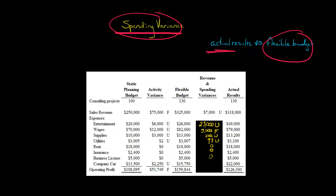For the company car, the actual expense was $22,000, but it should have been $15,750 per the flexible budget. So the actual expense was $6,250 higher than it should have been — that's an unfavorable spending variance.